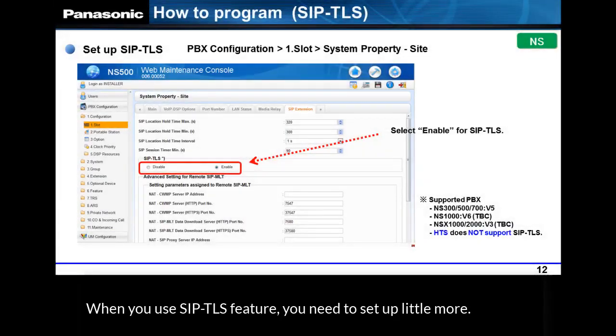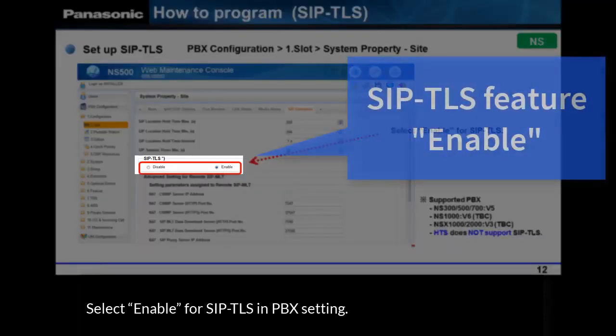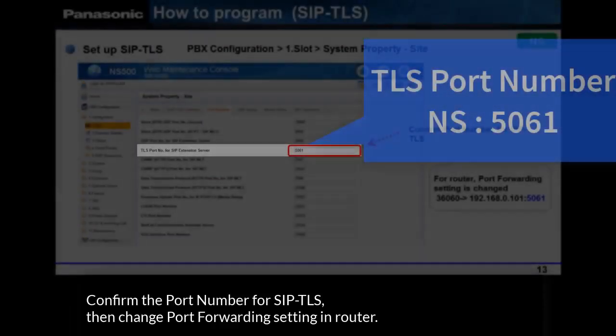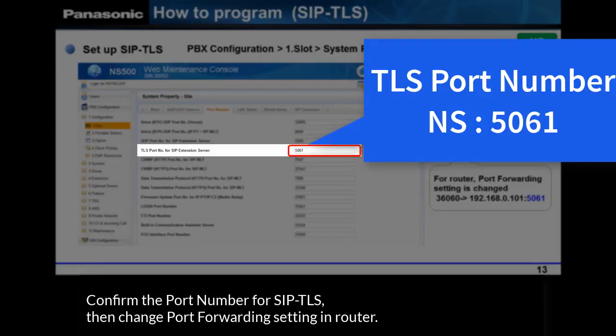When you use the SIP TLS feature, you need to set up a little more. Select Enable for SIP TLS in the PBX setting. Confirm the port number for SIP TLS, then change the Port Forwarding setting in the router.